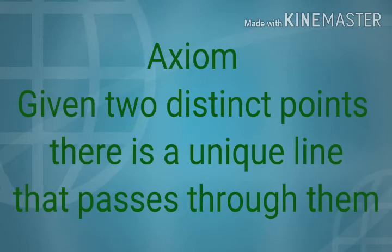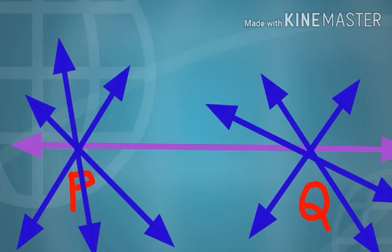Given two distinct points, there is a unique line that passes through them. In the figure, there are two points P and Q. Through P only, we can draw infinitely many lines. Through Q only, we can draw infinitely many lines. But through P and Q, we can draw one and only one line.